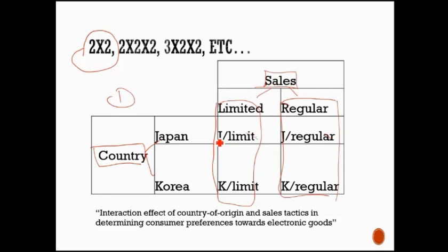However, might be interesting to see whether a limited version of Japanese, will it outsell a regular sold Korean brand, or, and vice versa, so comparing this to this, is called interaction effect, okay, whether having sales and country together, influencing the result, so these are interesting stuff that you can do with experiments.